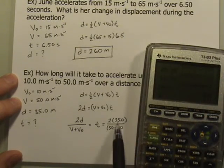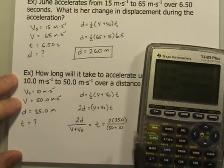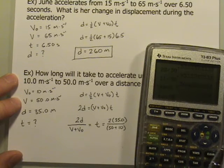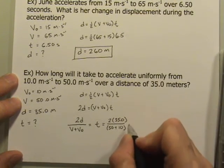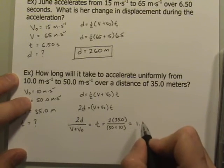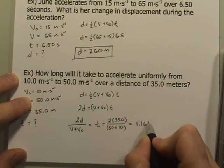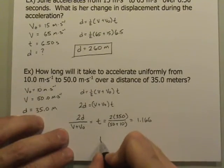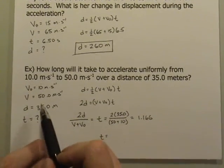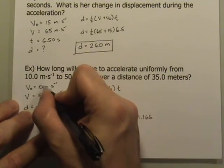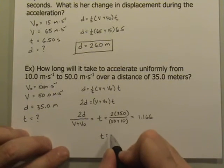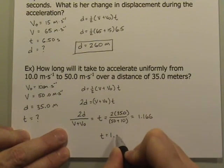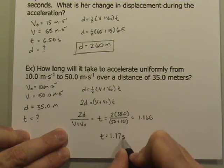So 2 times 35 is 70. And then I have 60 on the bottom. So 70 divided by 60 is 1.166. And then we will reduce that to the proper number of significant figures. I'm sorry, I should have said 10.0 here. So I have 3, 3, and 3. My final answer should also have 3. That means the final answer is 1.17 seconds.